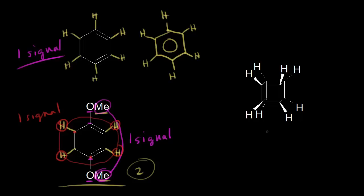Finally, let's look at cubane — one of the most interesting molecules. There are eight protons on cubane, which is just a cube structure. Those eight protons are all equivalent; if you rotate the cube, you can't tell a difference. So we have eight protons, all equivalent, giving only one signal. Cubane's NMR should show only one signal. That's how to look at a dot structure and figure out how many signals you'd expect to see on an NMR spectrum.